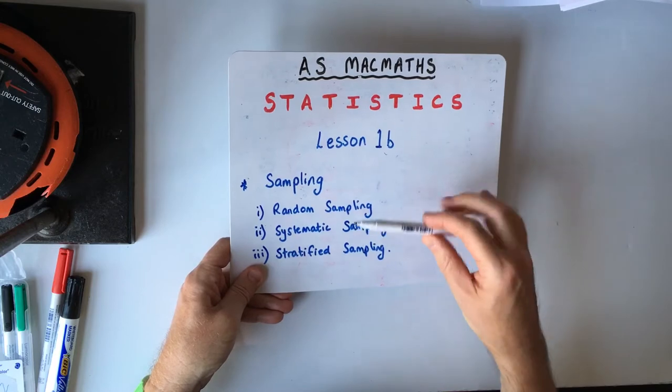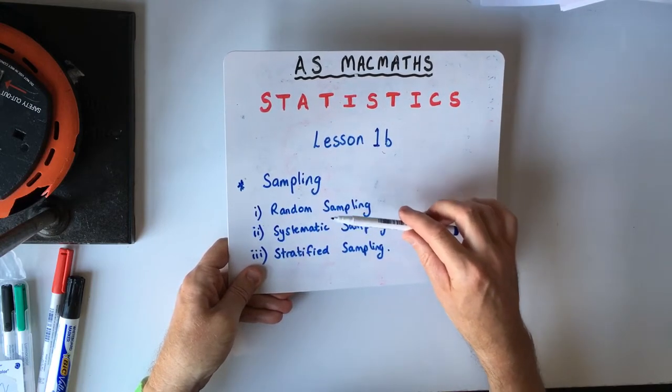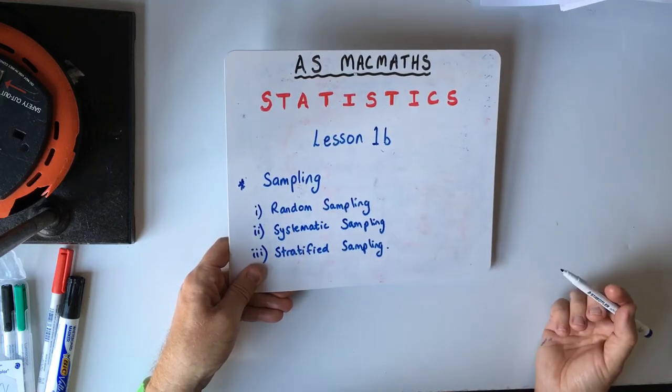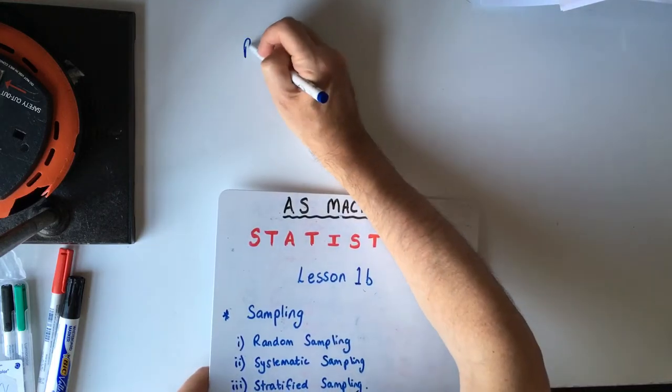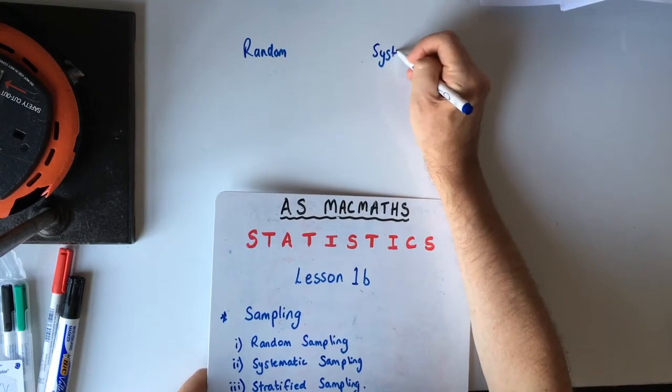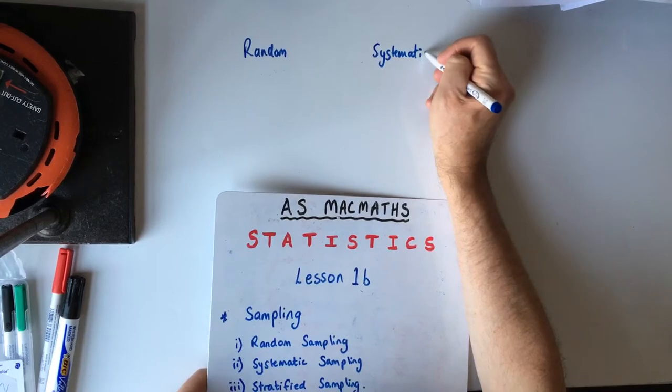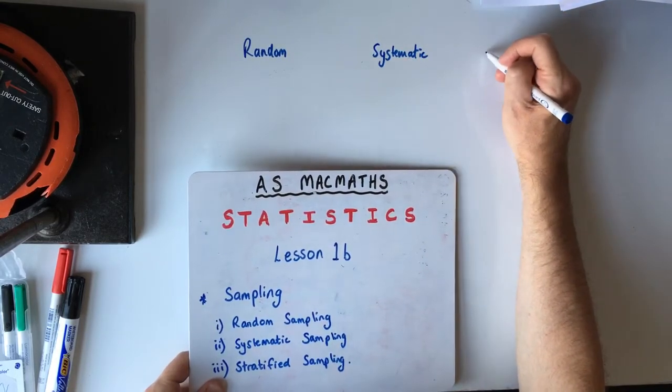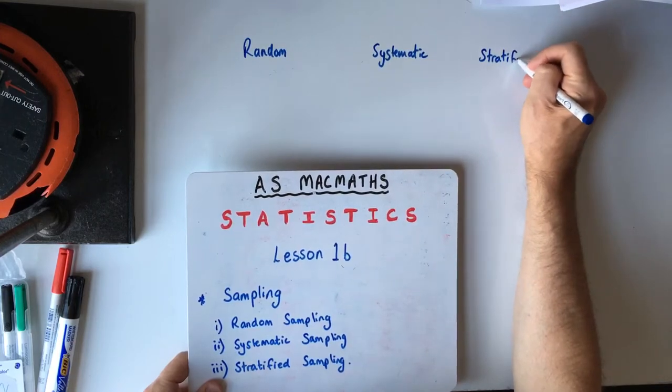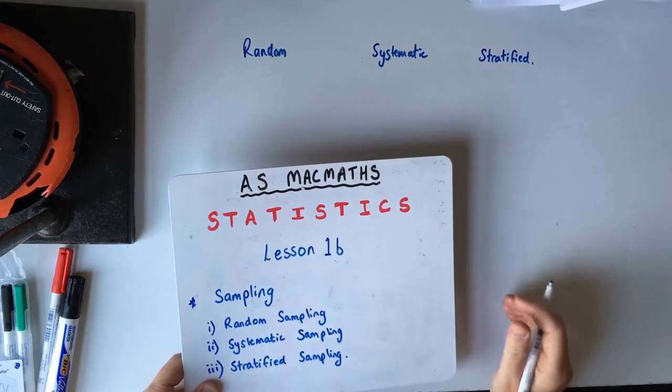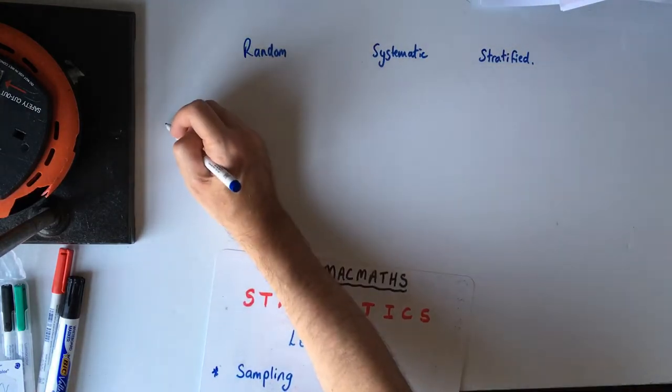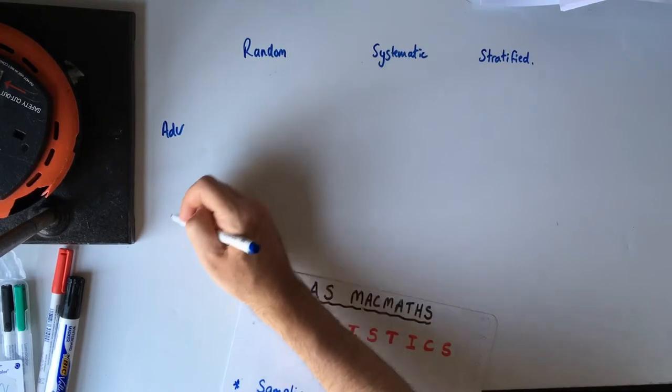So in this short lesson, I'm just going to talk about the advantages and disadvantages and just go through random, systematic and stratified and explain the terms to you. So we've got random sampling, systematic, systematic, stratified. So you've got to learn these. And we want advantages of those and disadvantages.